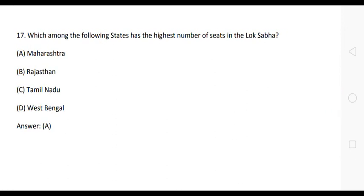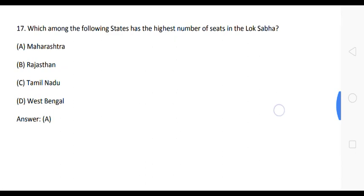The next question is: which among the following states has the highest number of seats in the Lok Sabha? Option A: Maharashtra. Option B: Rajasthan. Option C: Tamil Nadu. Option D: West Bengal. The correct answer is Option A: Maharashtra. That's all for today — please don't forget to subscribe and click the bell icon. Thank you friends.